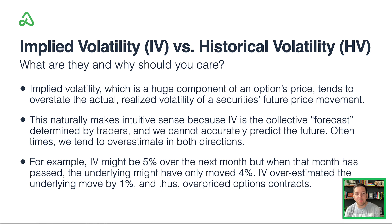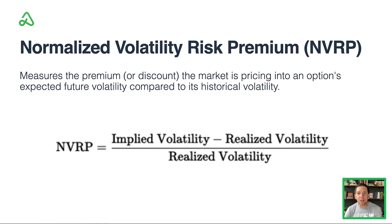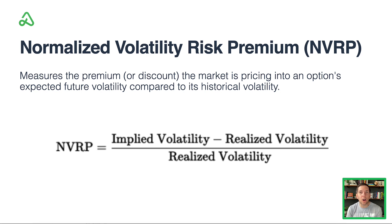For example, implied volatility might be 5% over the next month — our collective forecast as traders. We price options to assume the market is going to move 5%, when in fact it only moves 4%. So we've overestimated it by 1%. NVRP takes this concept of implied versus realized volatility and breaks it down into a ratio or percentage so you can determine whether trades are priced with a premium or a discount to the actual historical volatility.